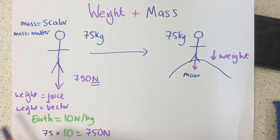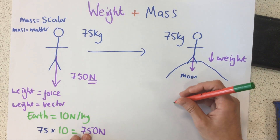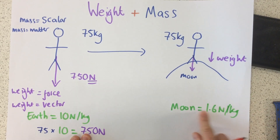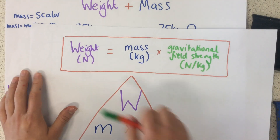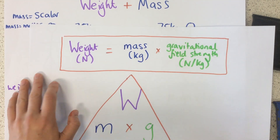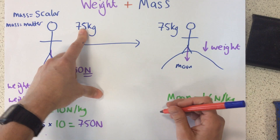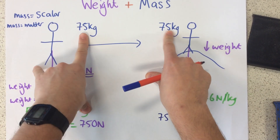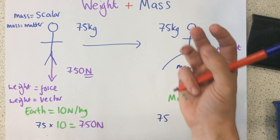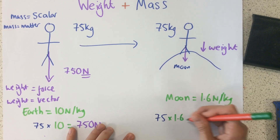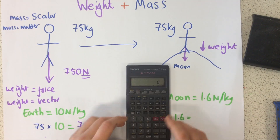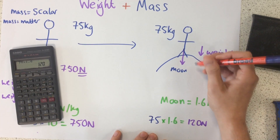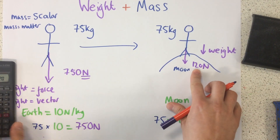However, this person has gone to the moon, where the gravitational field strength is much less — around 1.6 newtons per kilogram. You do not need to know this off by heart. Using the equation, we do mass multiplied by gravitational field strength. Their mass is still 75 kilograms — the particles and matter in them have not changed even though they've gone to the moon. The gravitational field strength is now only 1.6 newtons per kilogram. 75 times 1.6 equals 120, so their weight has dramatically decreased to 120 newtons.